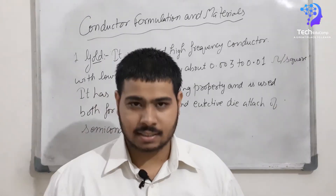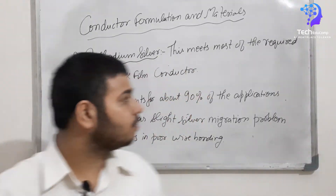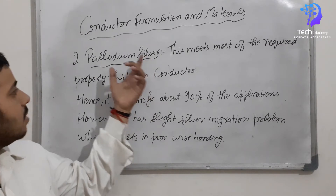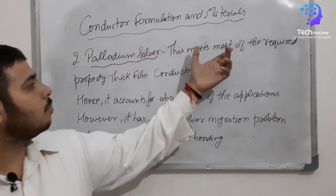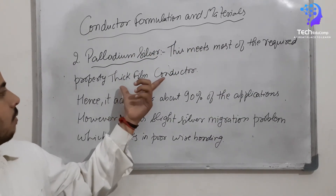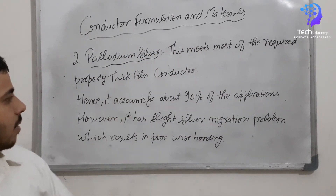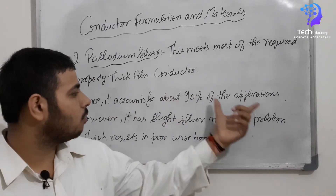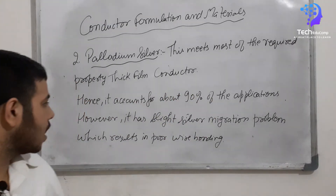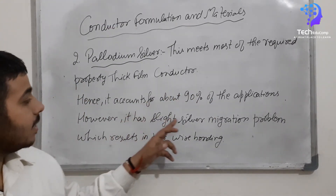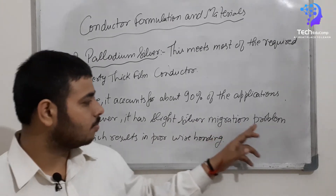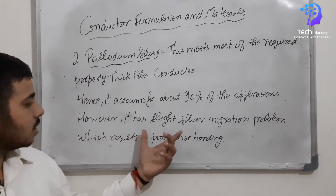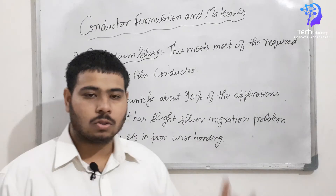The second material is palladium silver. Palladium silver meets most of the required properties for thick film conductors and accounts for 90% of applications. However, it has a slight silver migration problem which gives poor results in wire bonding.